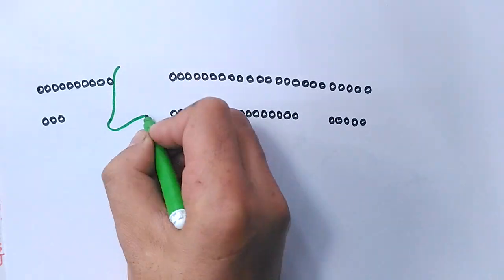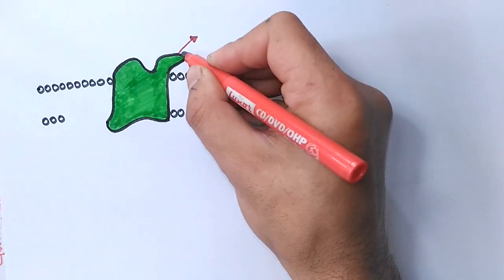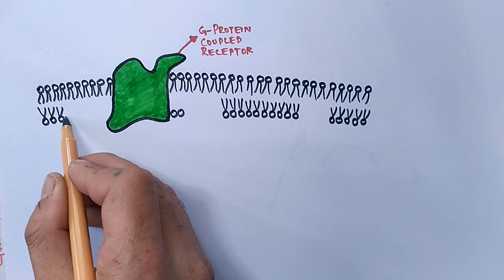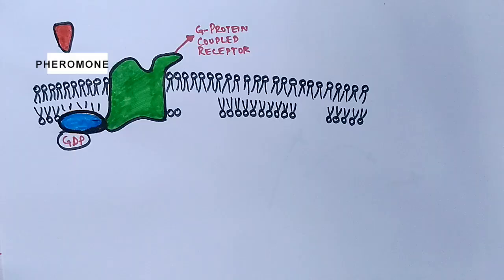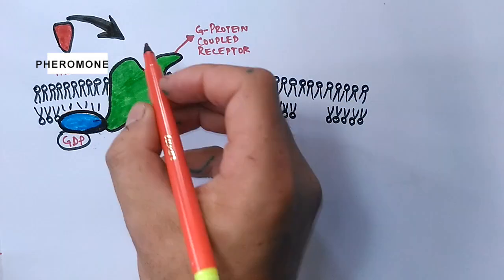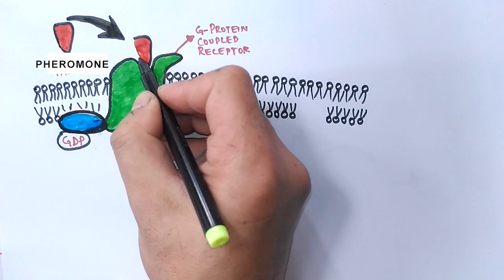In the signaling pathway, the yeast cell has a G protein coupled receptor and GDP is bound to the G protein when it's in an inactive state. When the pheromone is secreted by another nearby yeast cell and binds with the G protein receptor, as you can see in the diagram...